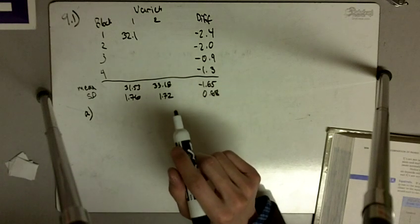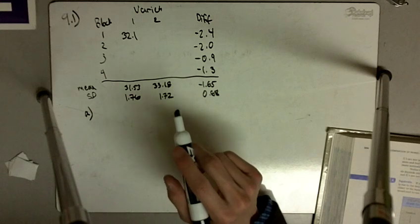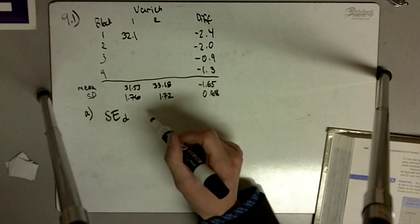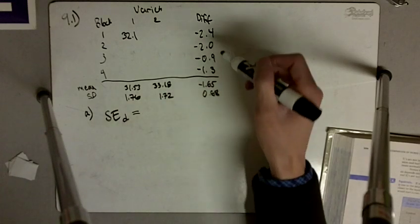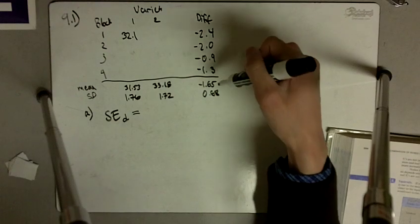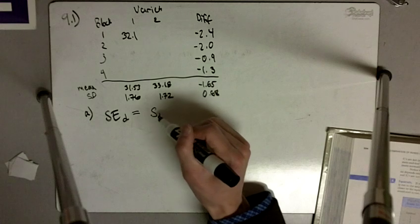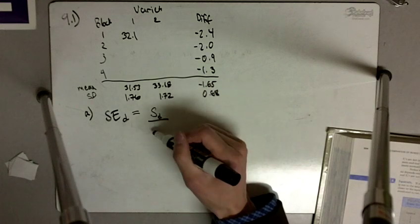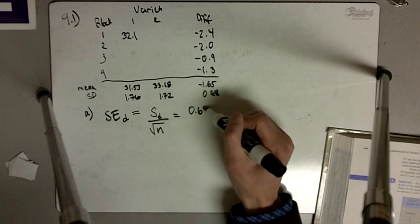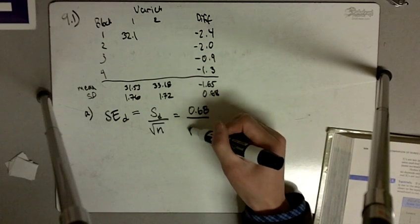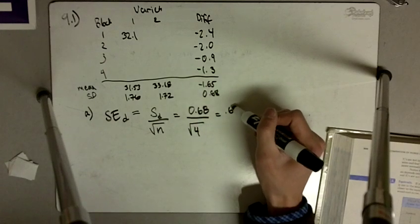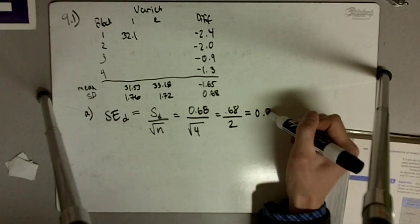Part A says: calculate the standard error of the mean difference between the varieties. We're looking for the standard error of the difference. I'm really only interested in this difference column. This is going to be the standard deviation of the difference divided by the square root of N. In this case, we have 0.68 divided by the square root of N. We have four blocks, so 0.68 divided by 2 equals 0.34.